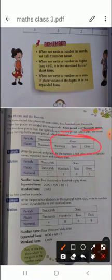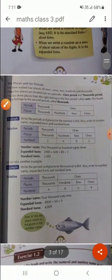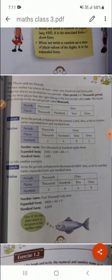In the ones period, there are three places: ones, tens, and hundreds. Thousands is in another period. Now come and see the examples. Write the periods and the place value for numerals.